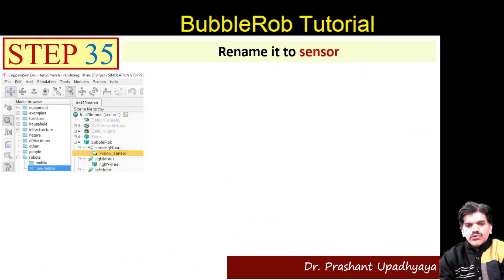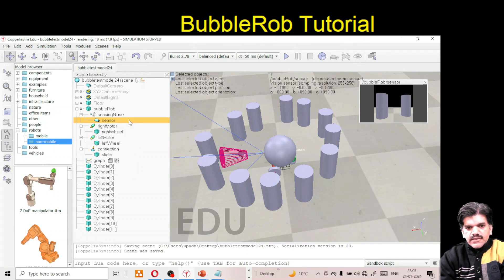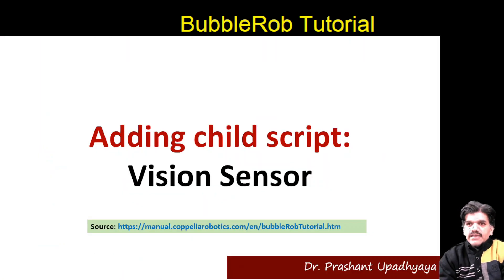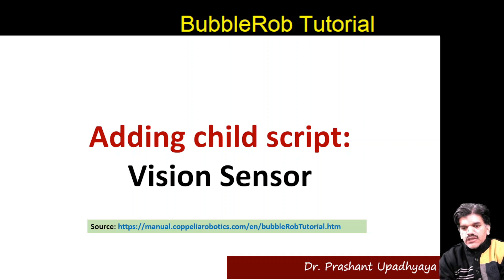The next step is to rename the vision sensor to 'sensor'. Go to the object and rename it as 'sensor' and press Enter. Now we start with the ambient script used in the bubble rope, which will allow you to move the bodies. You can also follow the tutorial given on the website coppeliarobotics.com, where all the codes are available.